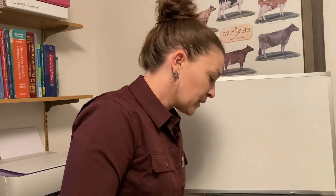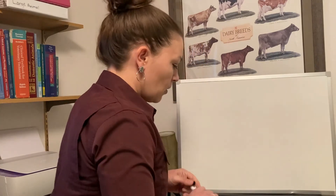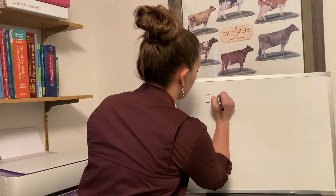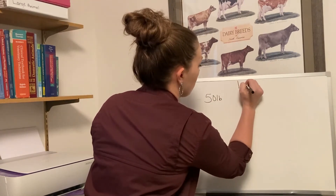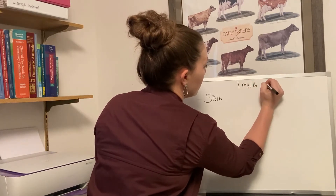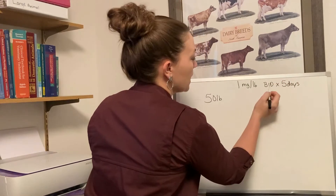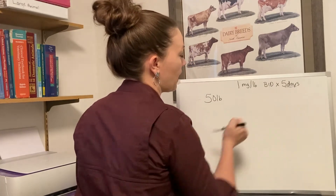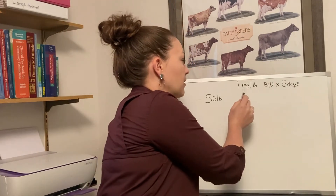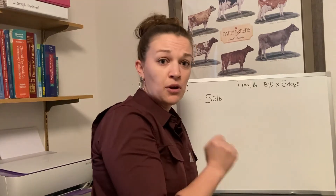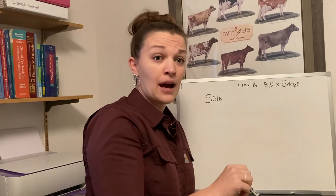The first example we're going to use today will be carprofen. Typically in small animal pharmacies, carprofen comes in 25, 75, and 100 milligram offerings. So when we calculate for our patient, we'll have three different options to choose from. Our first patient today is 50 pounds. The doctor says the dosage is 1 mg per pound, and we want to do this BID — twice daily or every 12 hours — for five days.